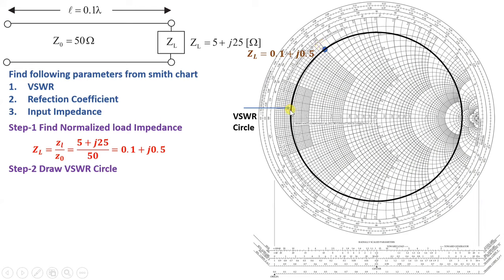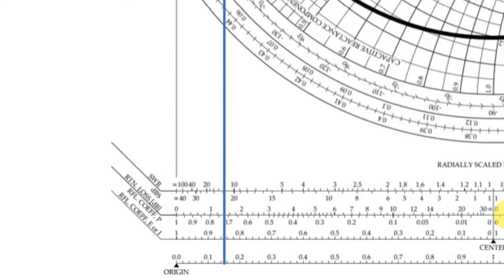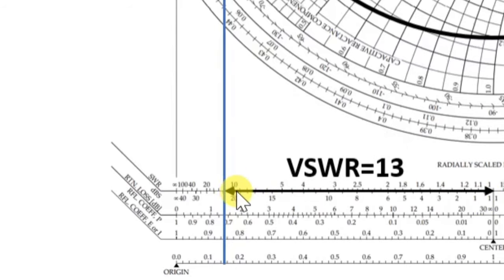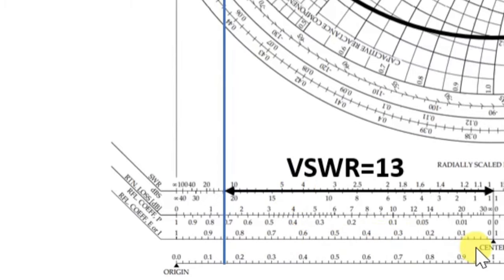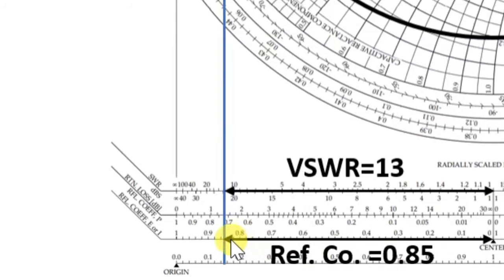By having this VSWR circle, we can find the value of VSWR and reflection coefficient. Stretching a line from the center to the VSWR circle on the scale, the VSWR value reads as 13. On the same axis, the reflection coefficient reads as 0.85. So VSWR equals 13 and reflection coefficient equals 0.85.